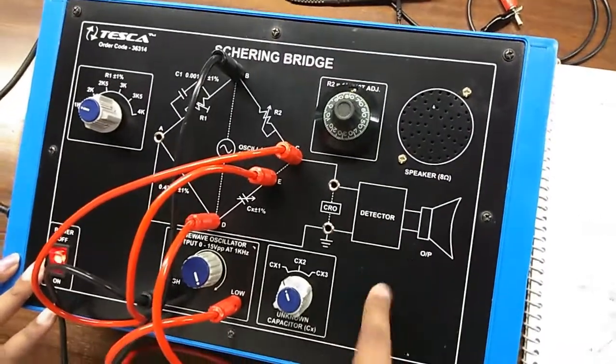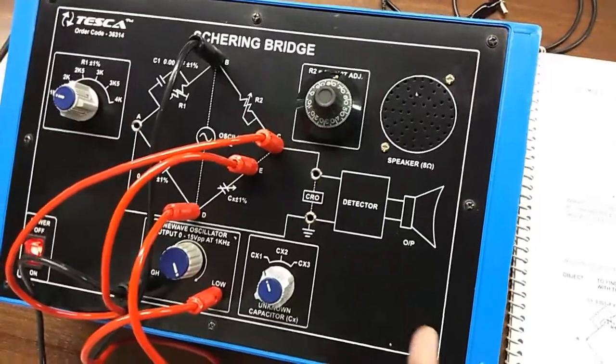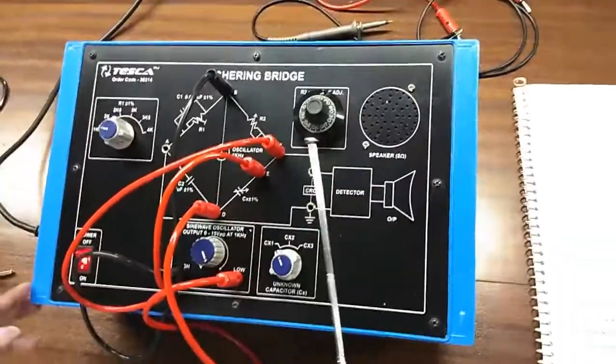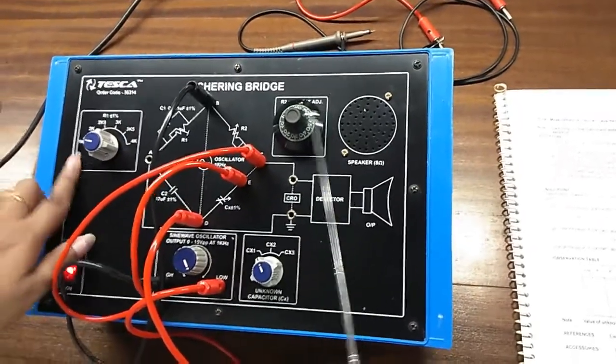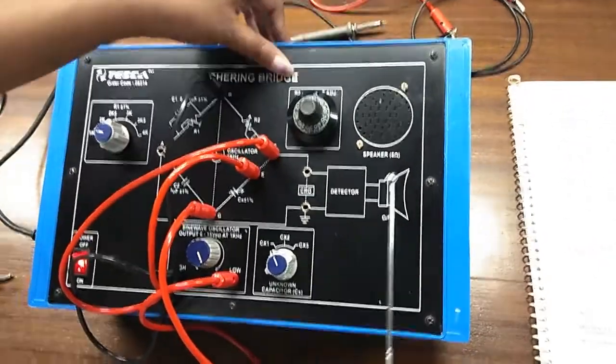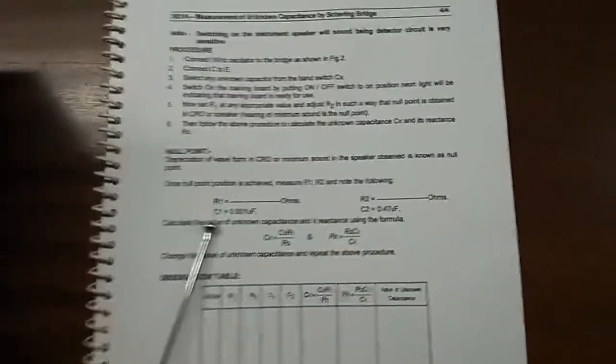This is the value of R2 at where the sound is minimum. Now we have this R1 value and this is R2 value, and with the help of this formula given here, we can find the value of the unknown capacitor.